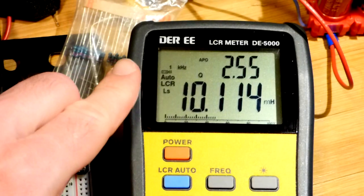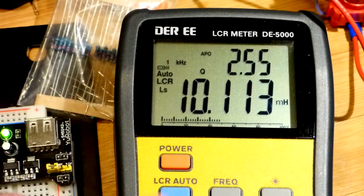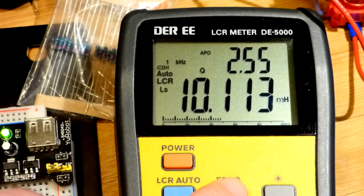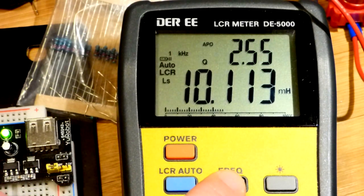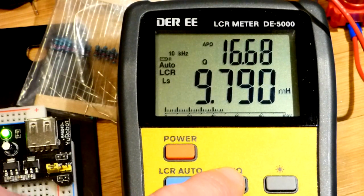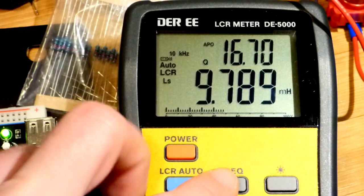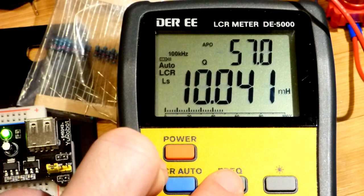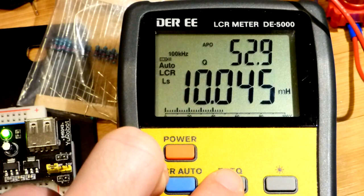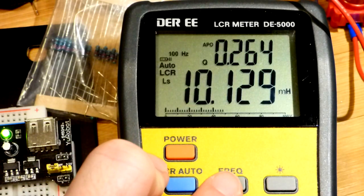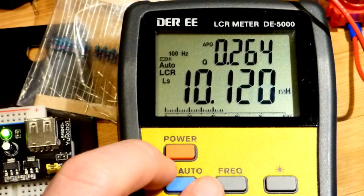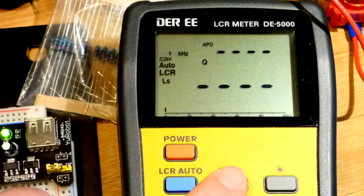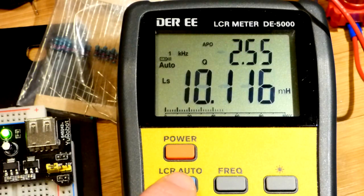This is at 1 kilohertz frequency. We can easily change the frequency by hitting the frequency button—now 10 kilohertz, then 100 kilohertz. You can see it holds 10 millihenry pretty nicely; its inductance is holding pretty steady.